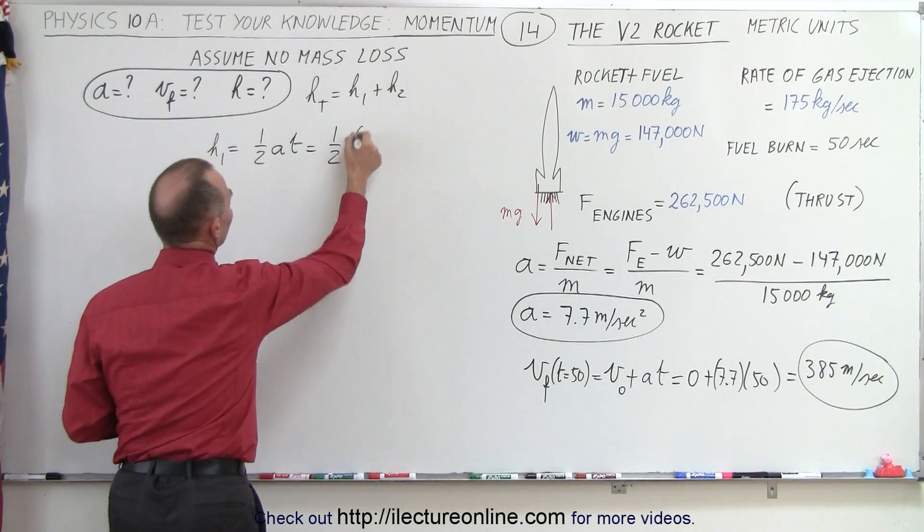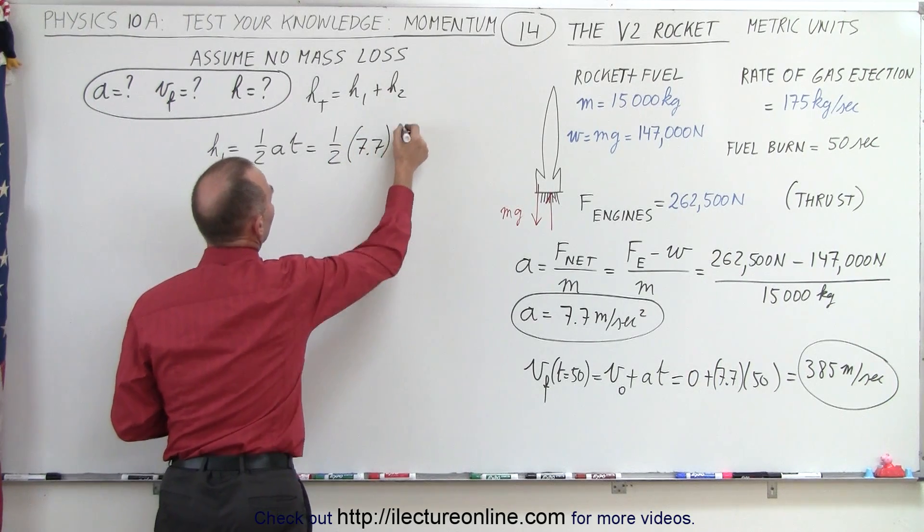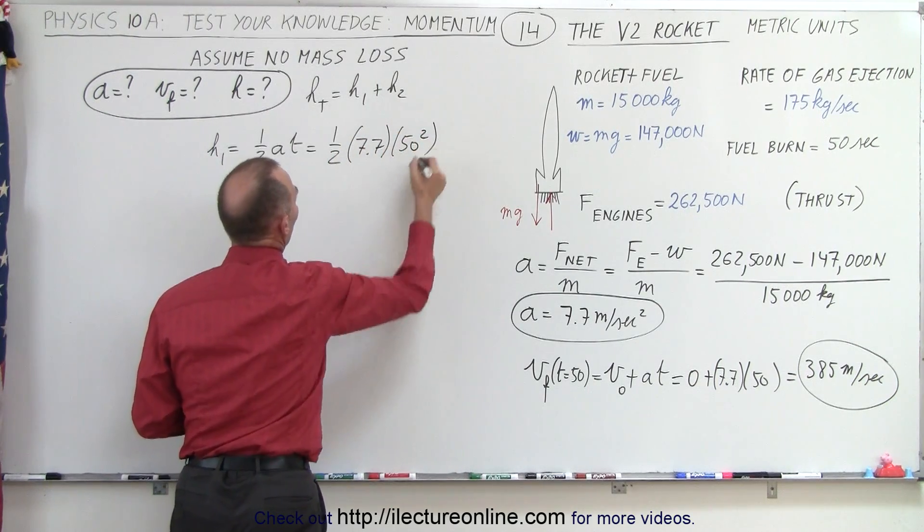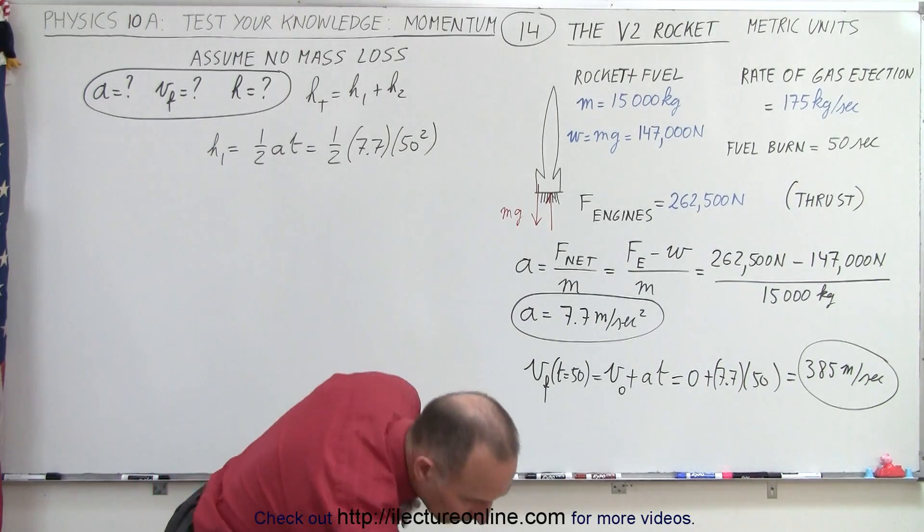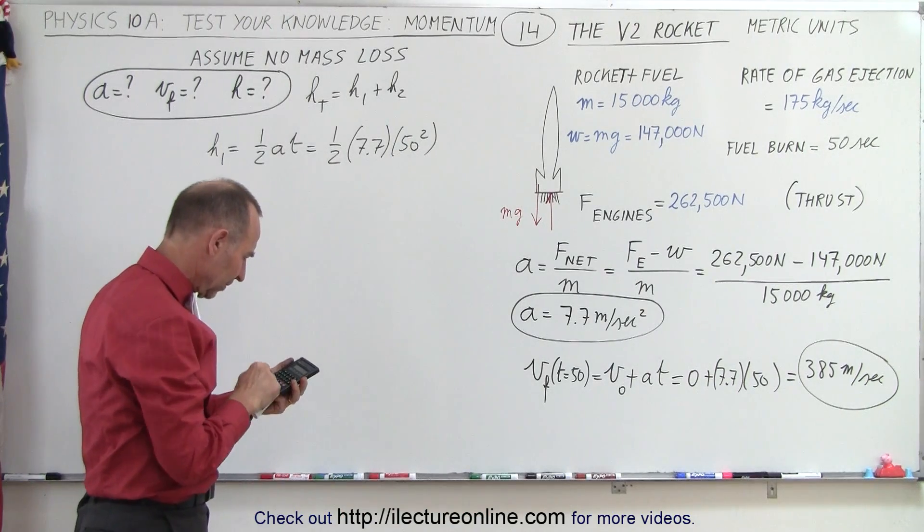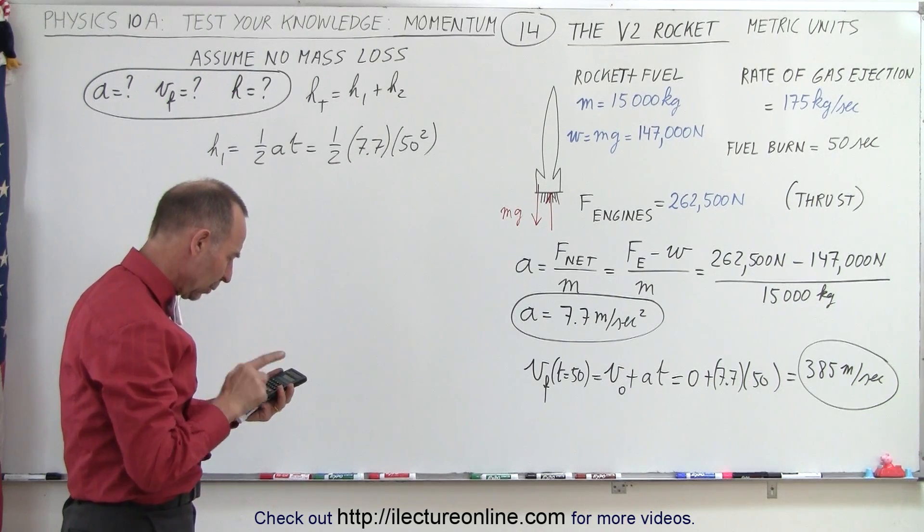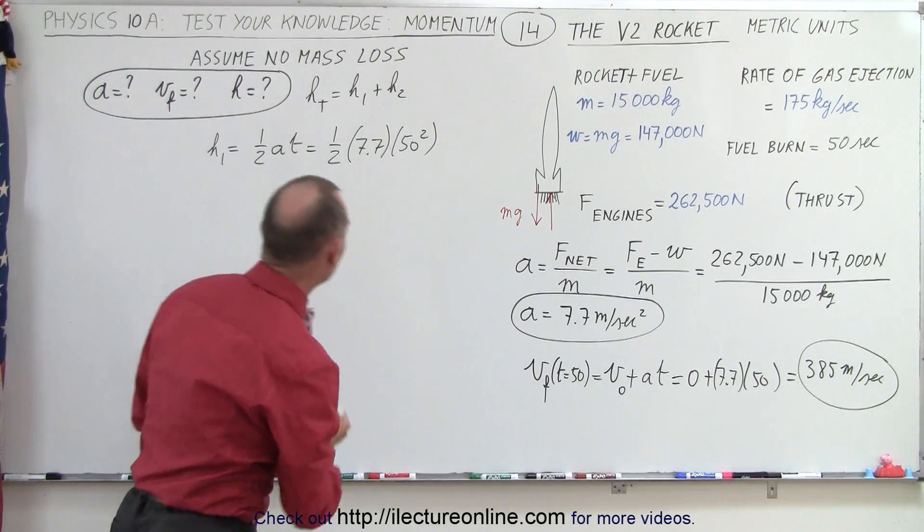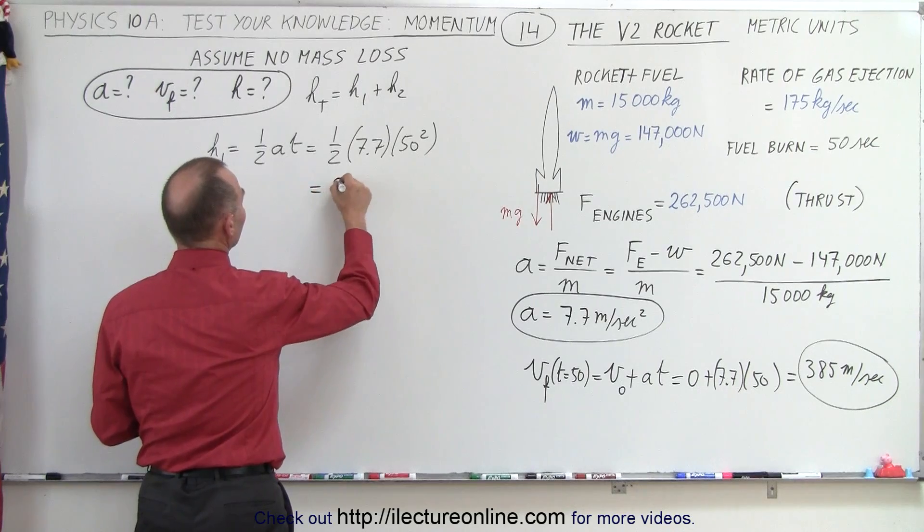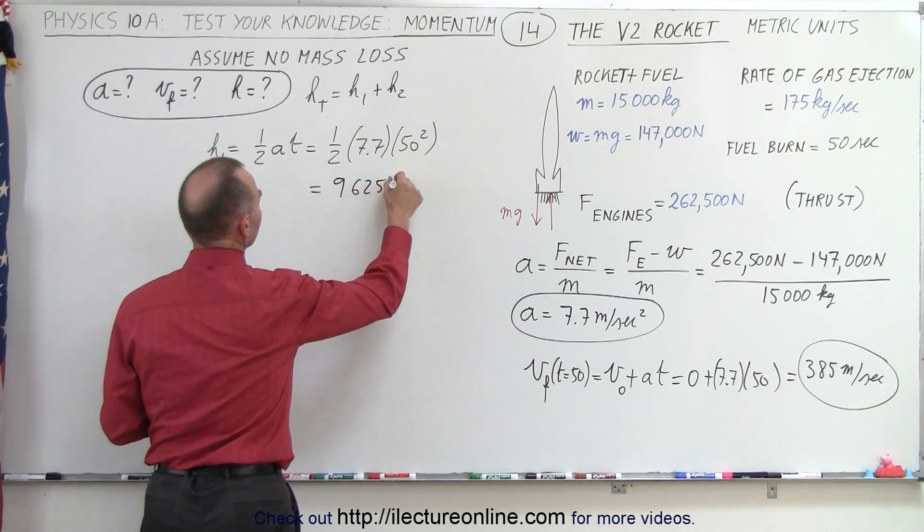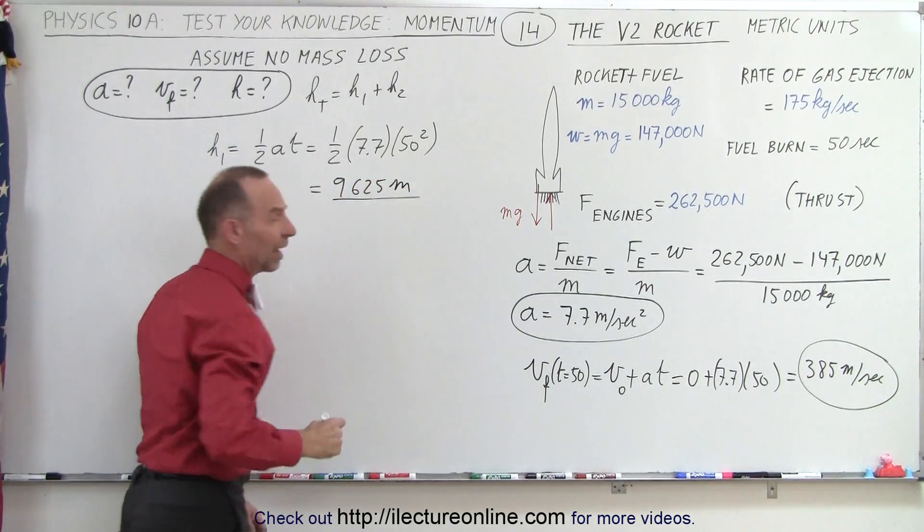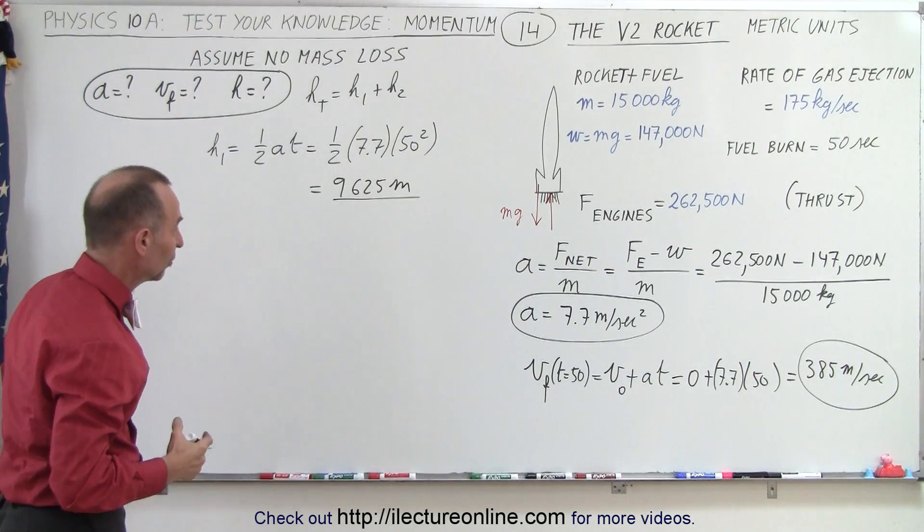So it's 1 half times 7.7 times 50 squared. So we take 7.7 divided by 2 times 2,500 equals it reaches a height of 9,625 meters. That's about the height that most airlines today fly.